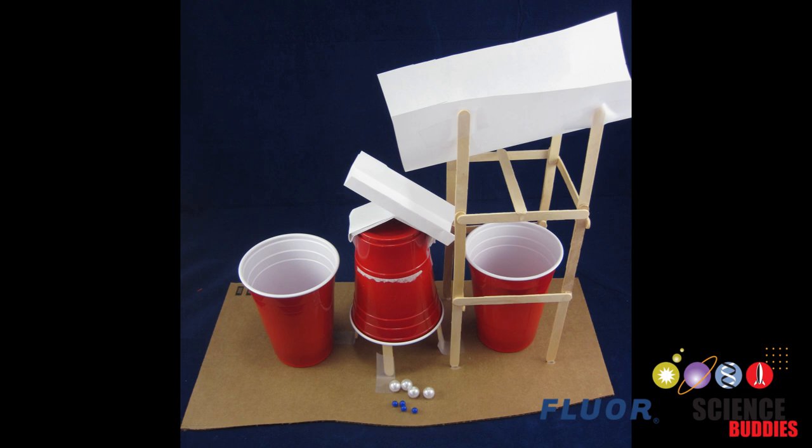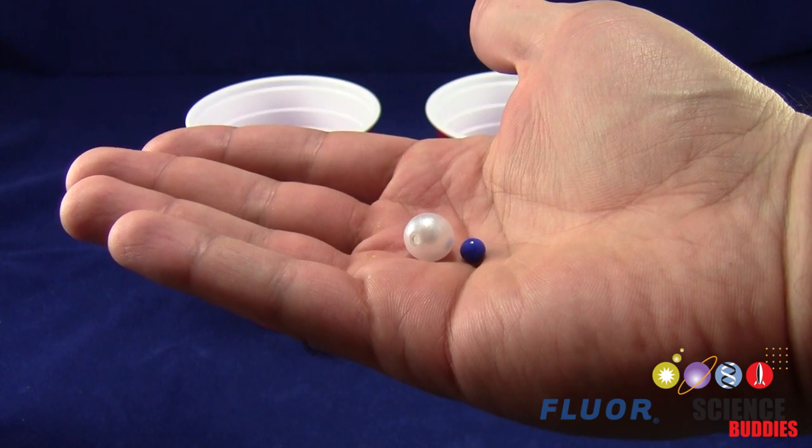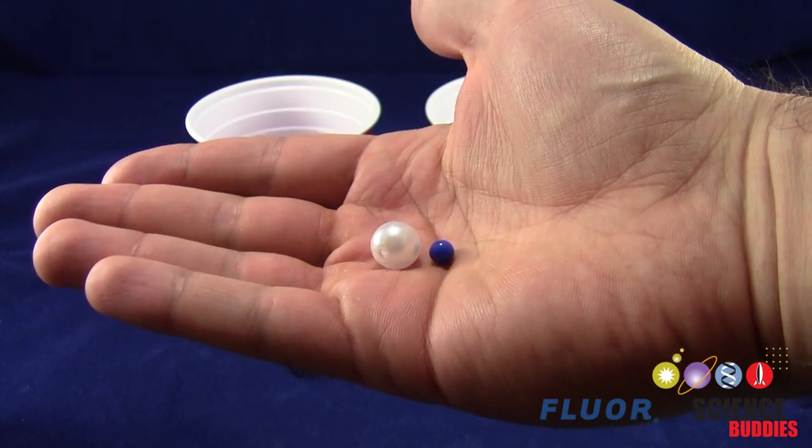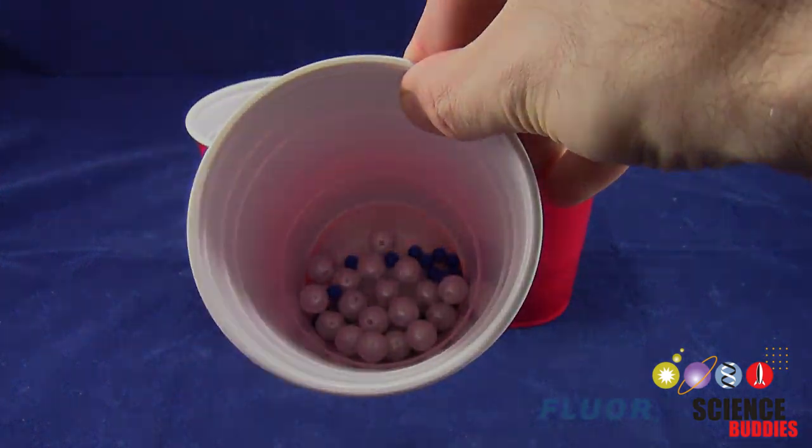This video is an introduction to the 2016 Floor Challenge. The goal of this year's project is to build a gravity-powered machine that can automatically sort large and small plastic spheres that start out mixed in one cup into two different cups.